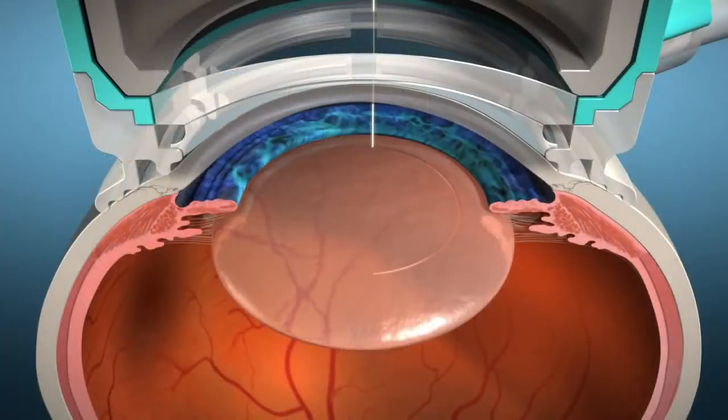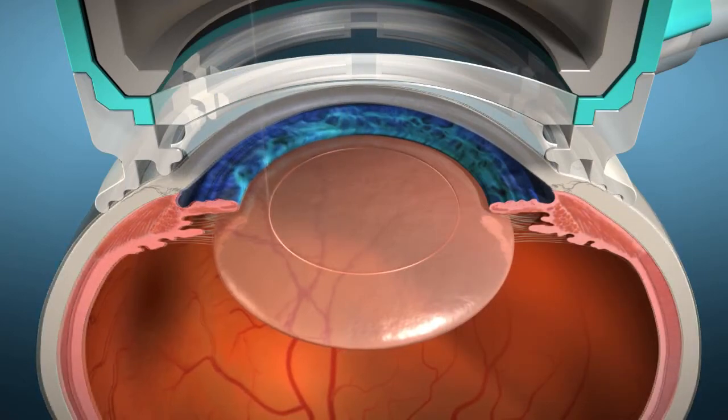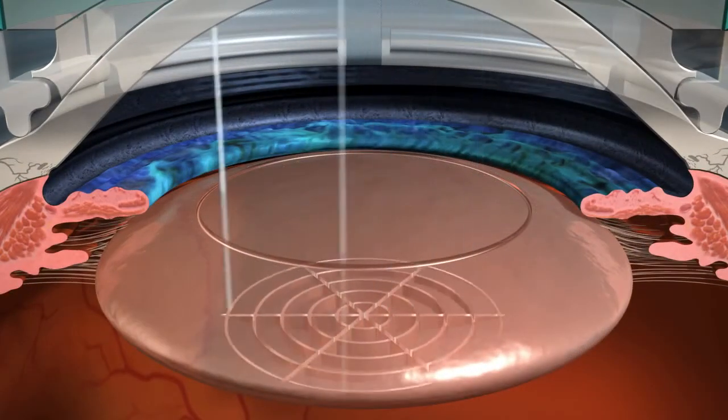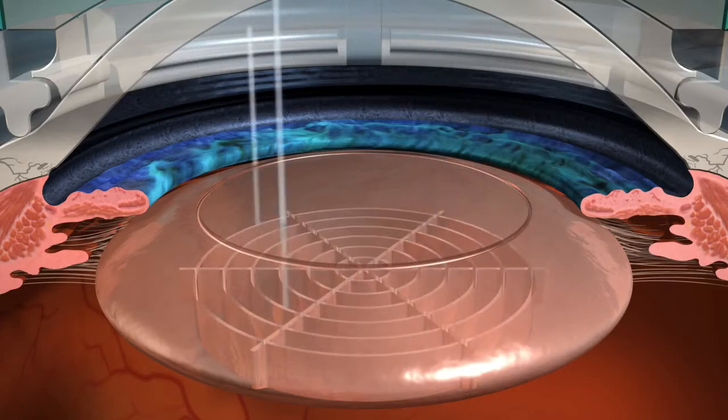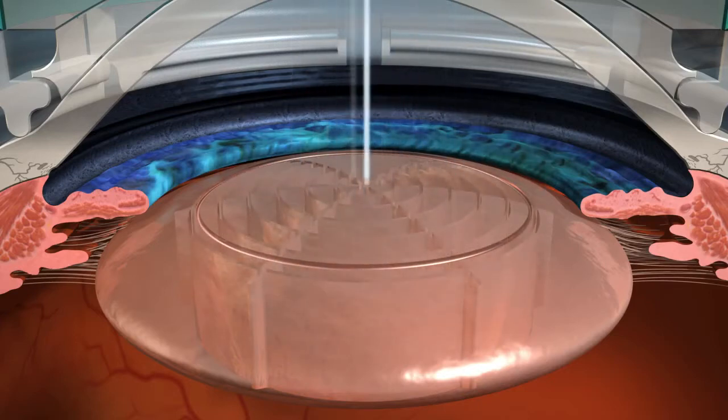Once the laser is engaged, an image-guided, precisely-centered capsulotomy is performed. Next, the lens treatment is started to prepare the lens for efficient removal with reduced phaco power. The treatment starts from the posterior side of the lens, moving towards the anterior surface.